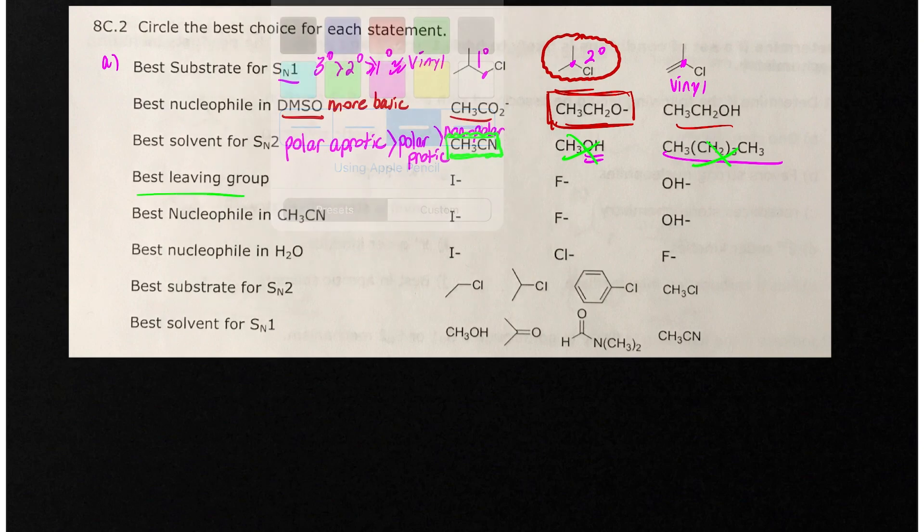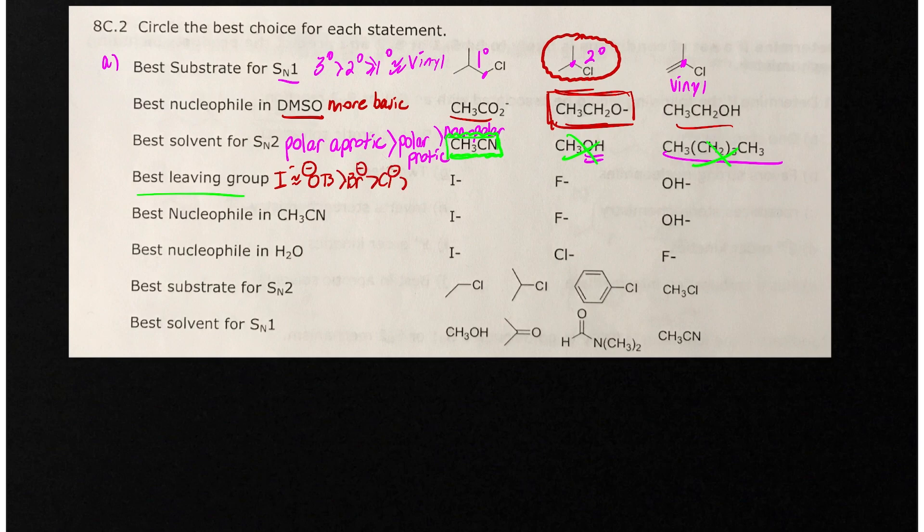Best leaving group. What have we learned about this? Iodide and tosylate, I'll put these about equal, are better than bromide, better than chloride. Fluoride never leaves, we don't see that in this chemistry. So if we want to look at that, here's I minus - that's the best leaving group.